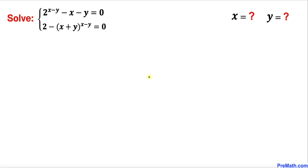Let's go ahead and get started with the solution. If we look at this system of equations, we can see that both of these equations are untidy and perplexing and they don't give us any sense of direction. So we are going to manipulate both equations by performing a few simple steps, starting with the first equation.